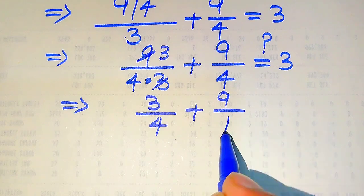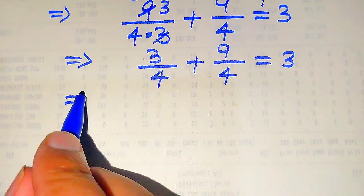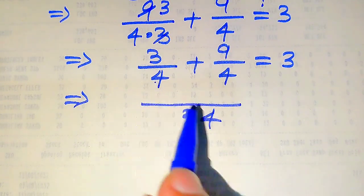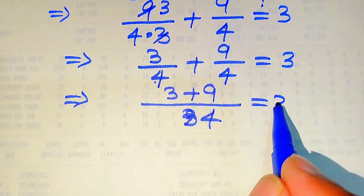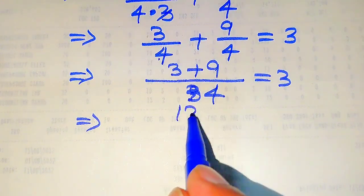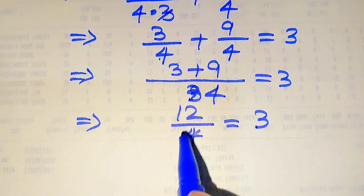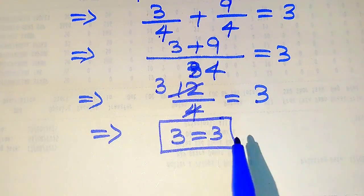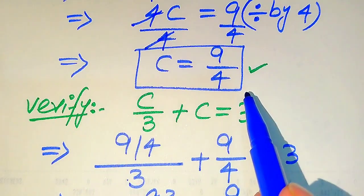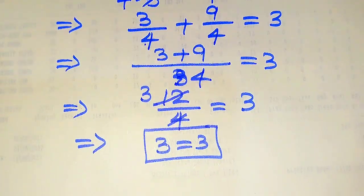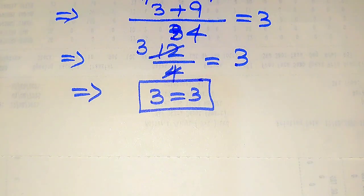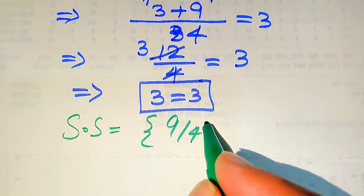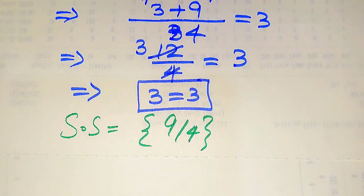We get 3 divided by 4 plus 9 divided by 4 equals 3. Taking the common denominator of 4, we get (3 + 9) divided by 4 equals 3, which is 12 divided by 4 equals 3. Since 3 equals 3, the value C = 9/4 satisfies the equation. Therefore, the solution set is {9/4}. This is the final answer from the first method.